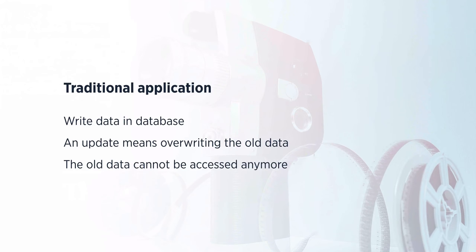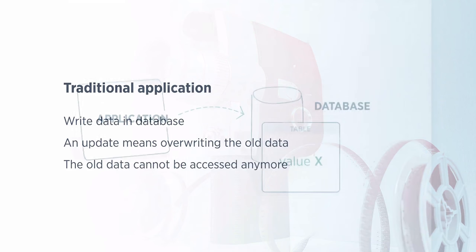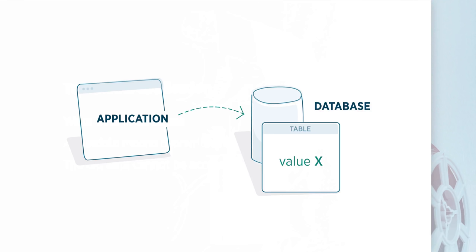You've probably created what I call the traditional application. Such an application just writes its data to the database. When you want to update something, you overwrite the old data — meaning that old data is gone and cannot be accessed anymore. In schema form: your application writes value X to the database, then when you update, value Y is written and value X is just gone.